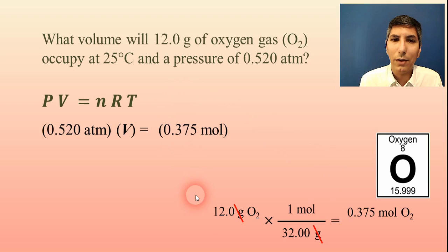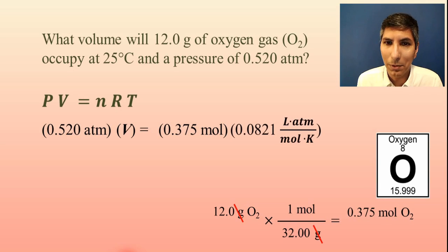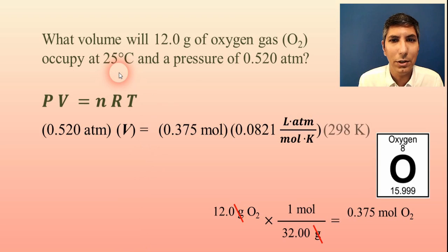So be aware that you may have to do a mole conversion, and that's normal. That's very typical. R is still our gas constant, 0.0821 liter atmospheres per mole kelvin, and T is for temperature, and that temperature is 25 degrees Celsius. I've got to change that to kelvin so that's 298 kelvins.